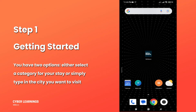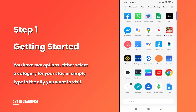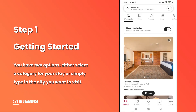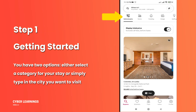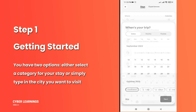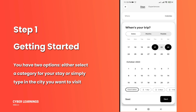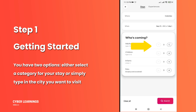Step 1: Getting Started. Open the Airbnb app and land on the initial screen. You have two options: either select a category for your stay, or simply type in the city you want to visit along with your check-in and check-out dates. Don't forget to specify the number of adults and children joining you.